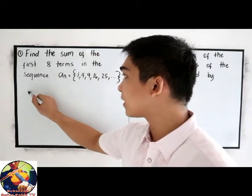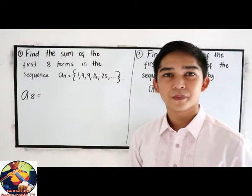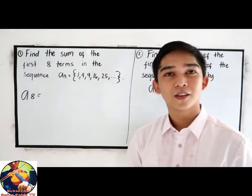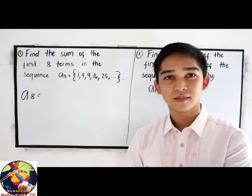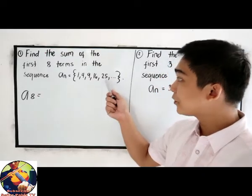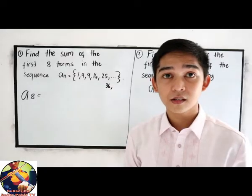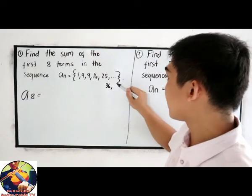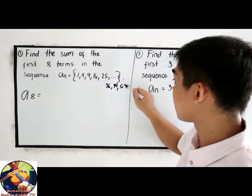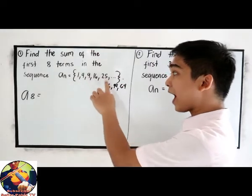We are going to find S8. But first, let us study our pattern: 1, 4, 9, 16, 25. Those are the perfect square numbers. So after 25 we have 36, after 36 we have 7 times 7 which is 49, and next will be 8 times 8 which is 64. Our 8 terms are now complete: 1, 2, 3, 4, 5, 6, 7, 8.